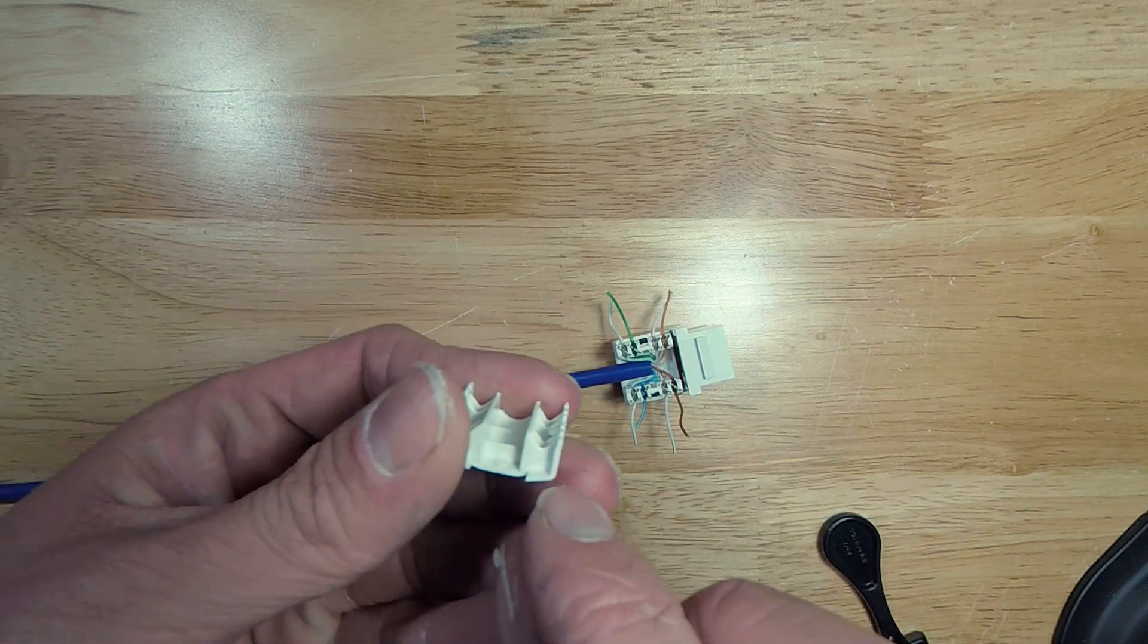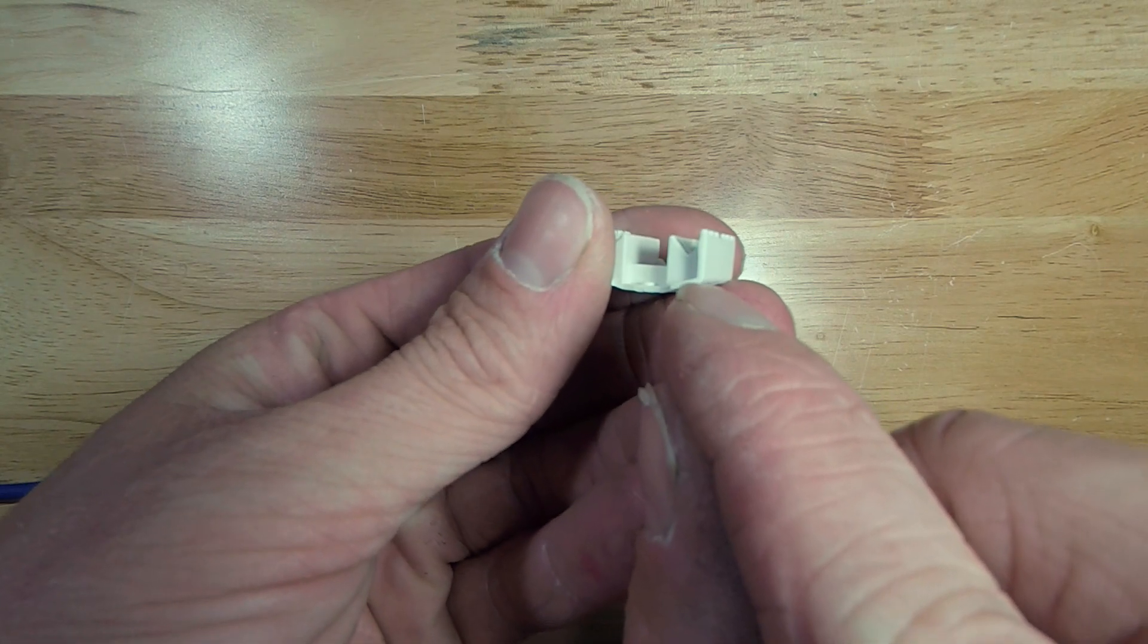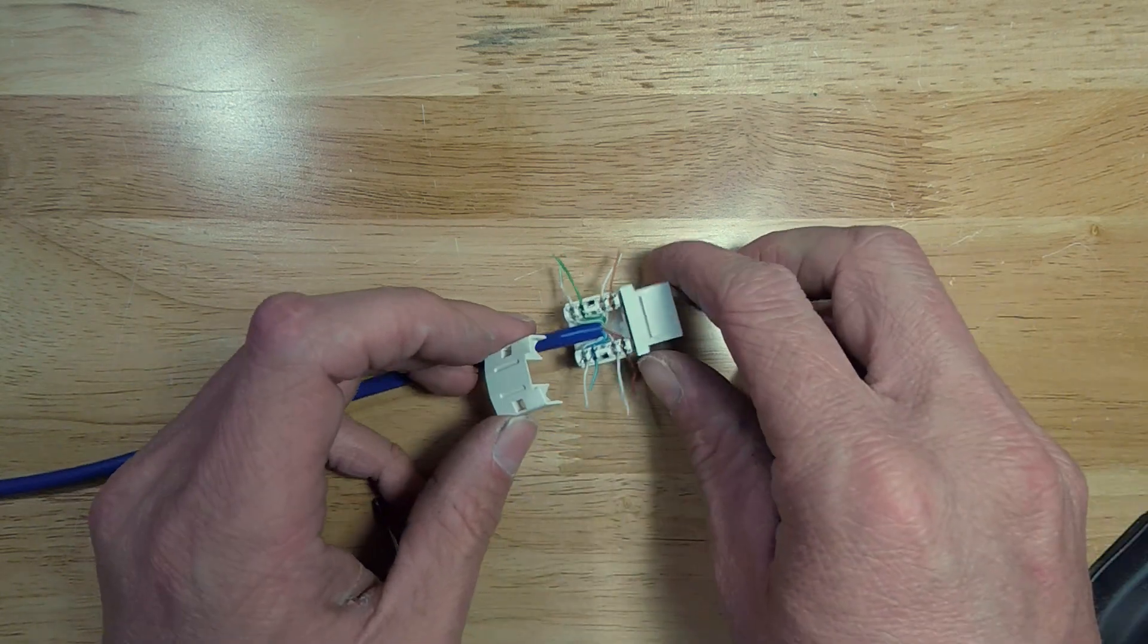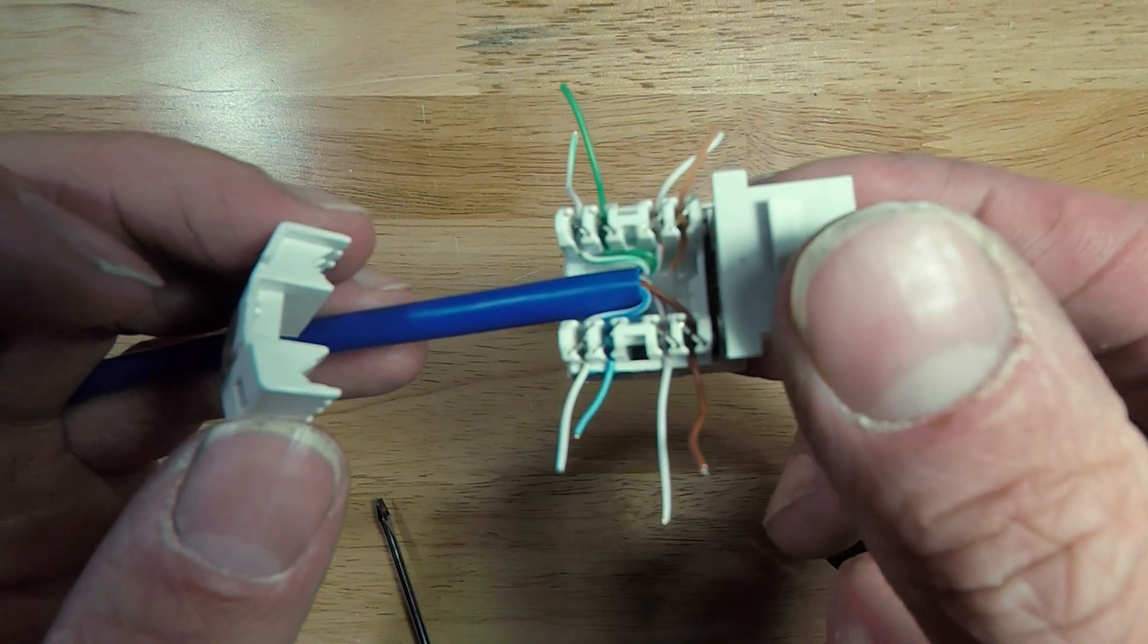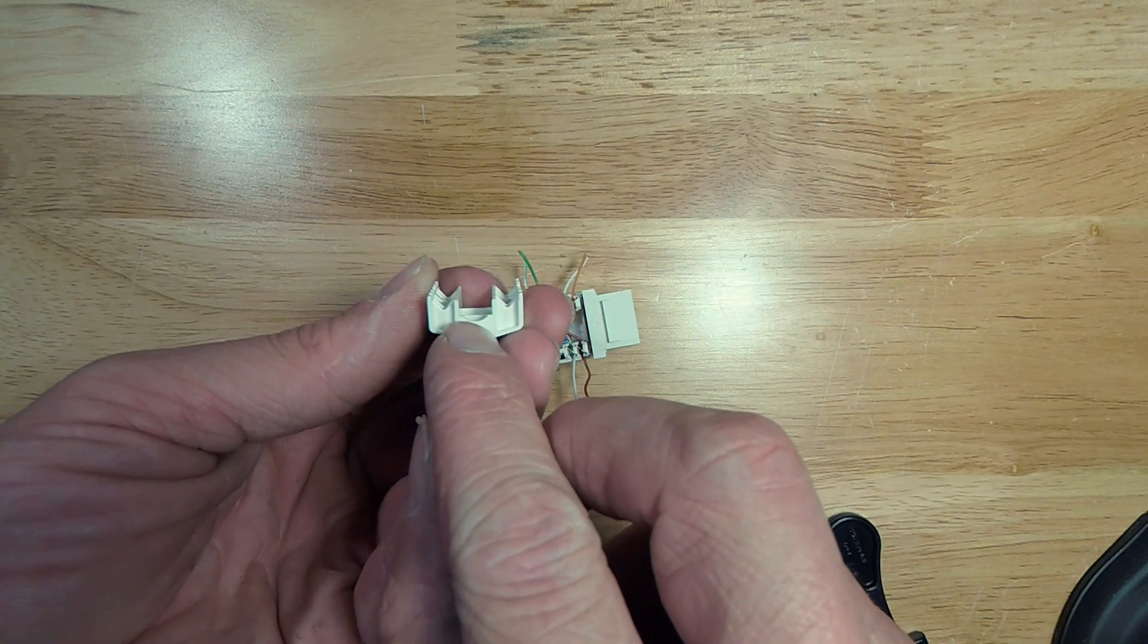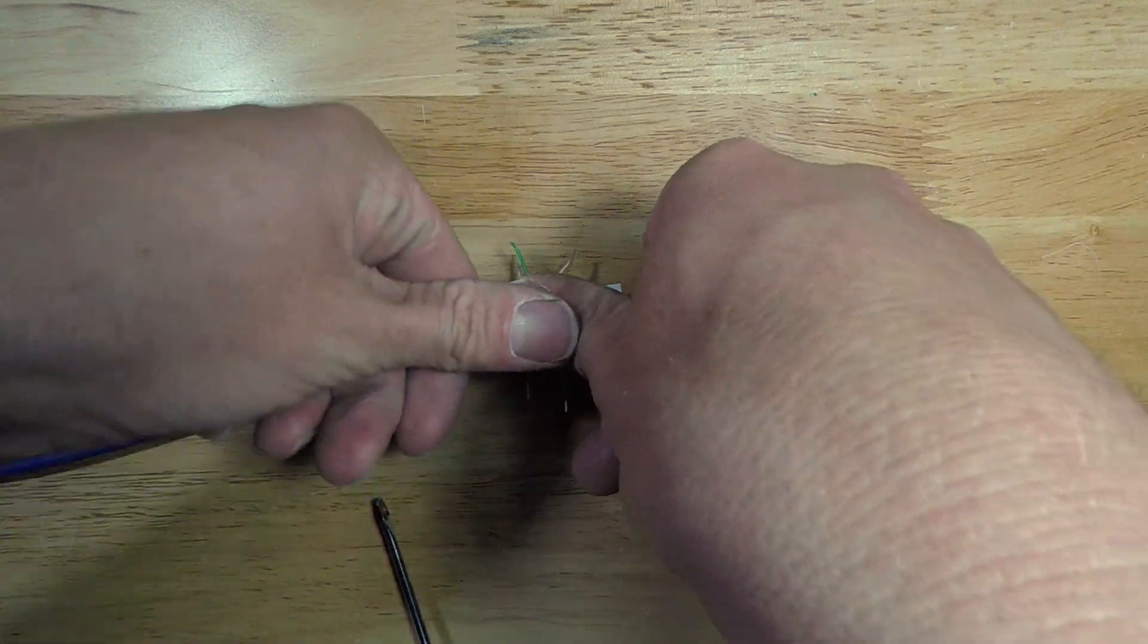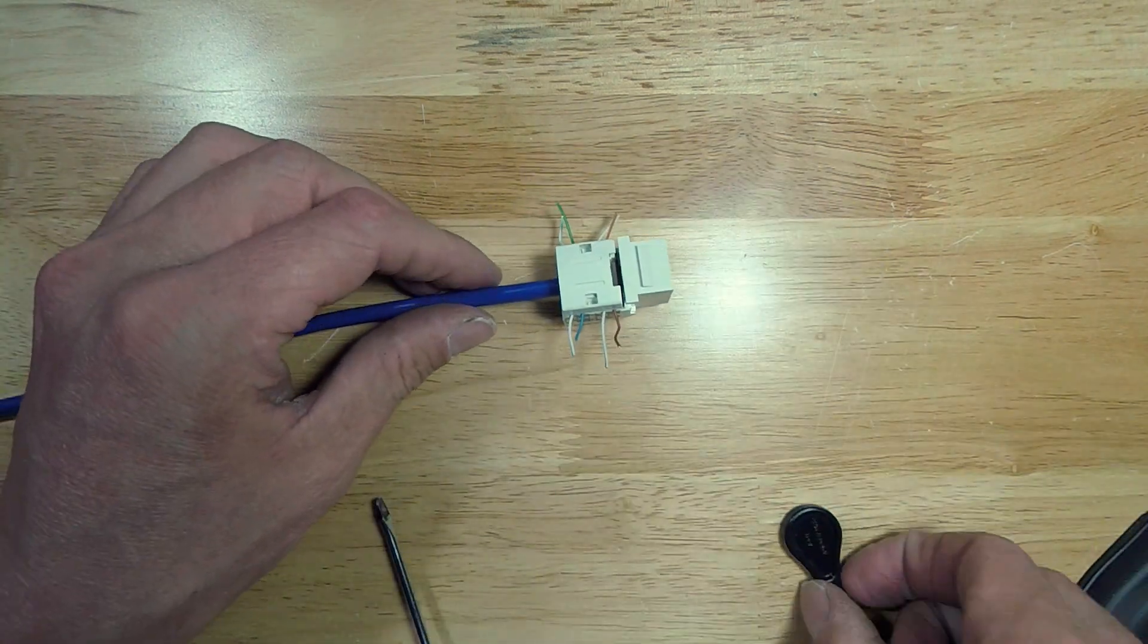These little edges here are gonna make sure the wire doesn't come out of the little metal blades that are in there. One side is going to keep the ethernet cable in place. The other side doesn't have that piece. Make sure you put it on correctly and click them down.